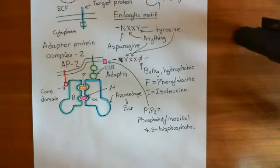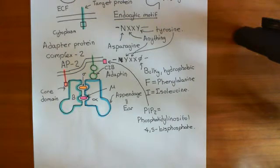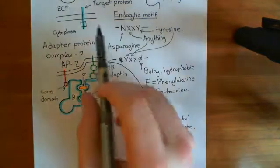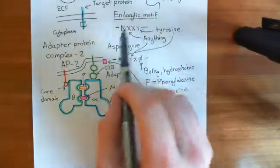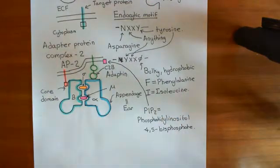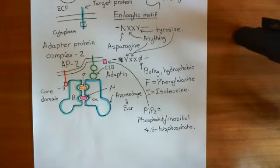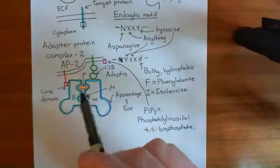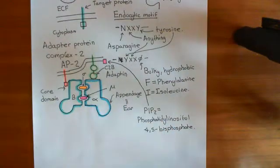Welcome back to this next video in which we are discussing clathrin-mediated endocytosis and the endocytic pathway. So we've seen how if we've got a target protein in the membrane of the cell which we want to endocytose, that target protein will have exposed on its cytoplasmic domain some sort of endocytic motif, whether this is the NXXY endocytic motif or the YXXPhi endocytic motif. And this endocytic motif is what the adaptor protein complex 2 is going to bind to. We've also seen how the adaptor protein complex 2 is targeted to the plasma membrane via its interaction with the C2B domain of synaptotagmin 1/2.